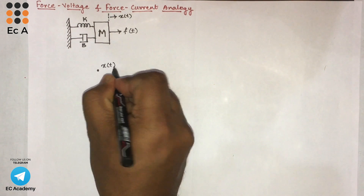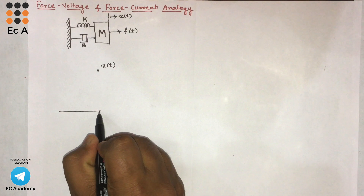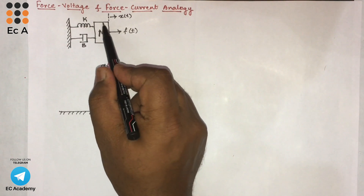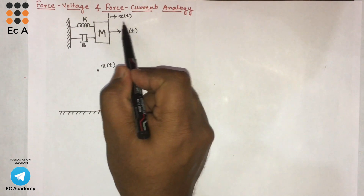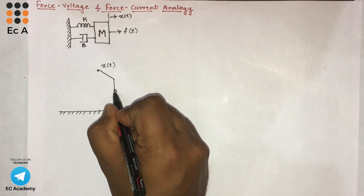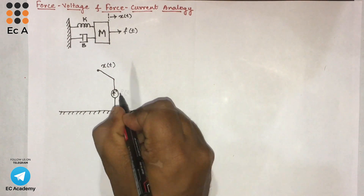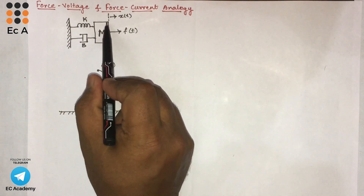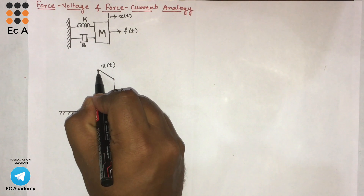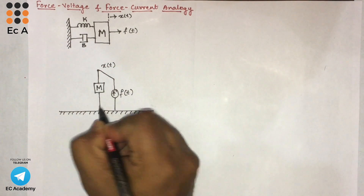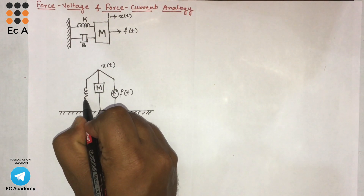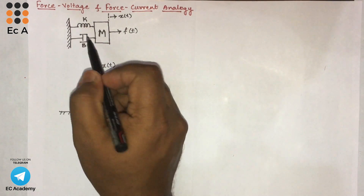Let us call that node as x of t and let us write a reference line. This force is applied to mass, and due to this applied force, there will be a displacement which is x of t. So we can write the force towards x of t. Due to this applied force, there will be opposing force by this mass, this spring, as well as this dashpot. So there will be opposing force by the mass, opposing force by this spring, and opposing force by this dashpot.